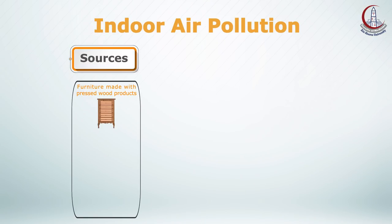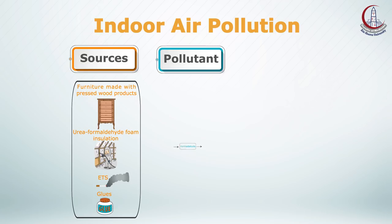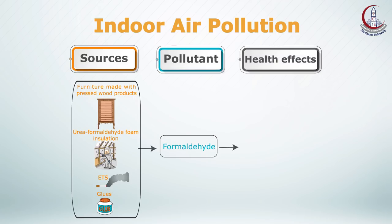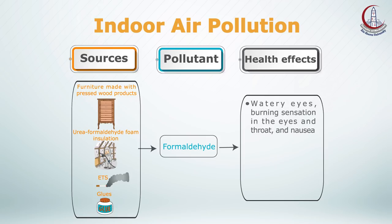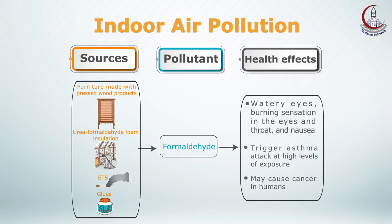Furniture made with pressed wood products, urea formaldehyde foam insulation, environmental tobacco smoke, and glues contain formaldehyde. It is an allergic agent leading to watery eyes, burning sensation in the eyes and throat, and nausea. It also triggers asthma attacks at high levels of exposure and may cause cancer in humans.